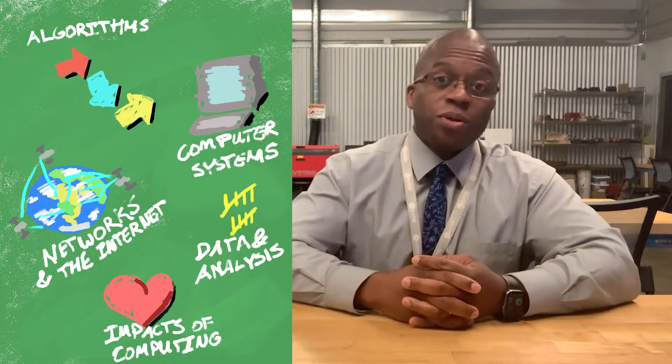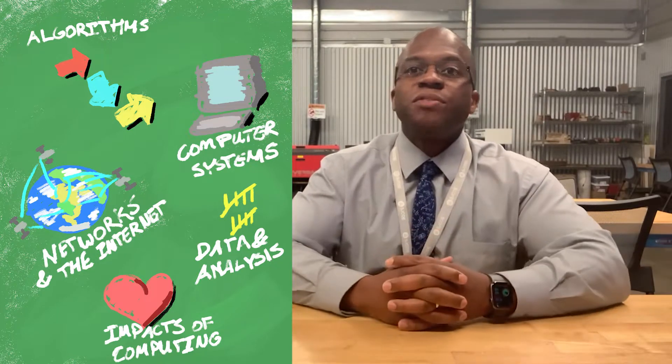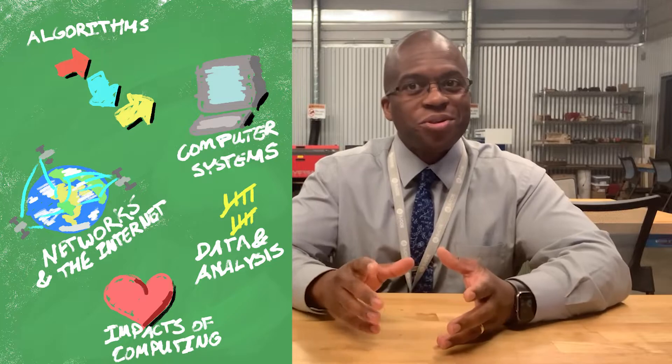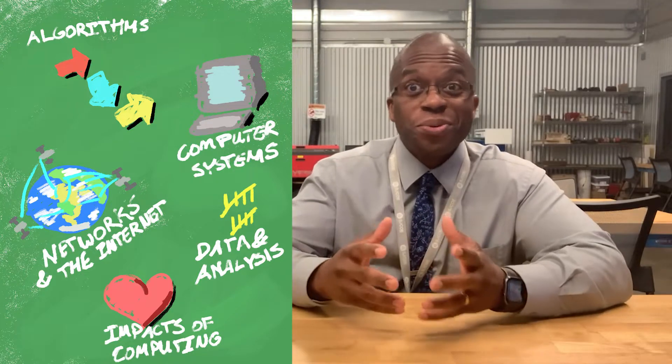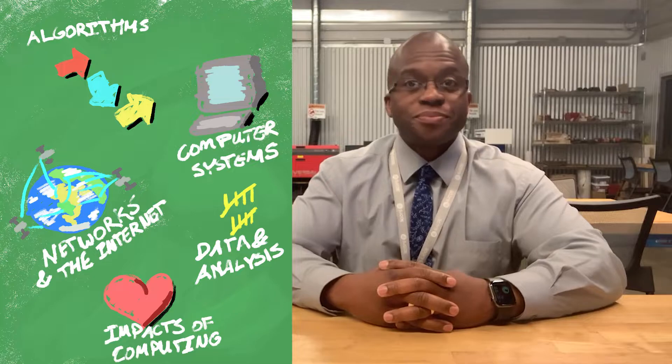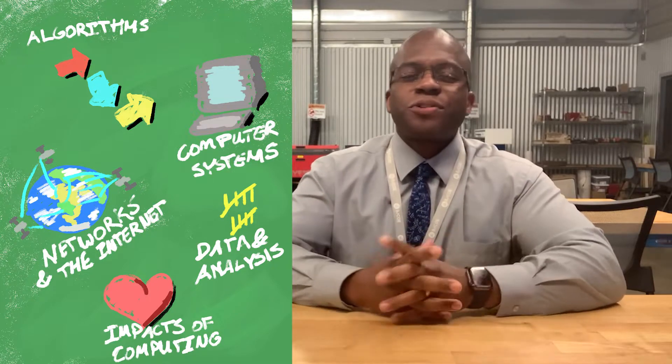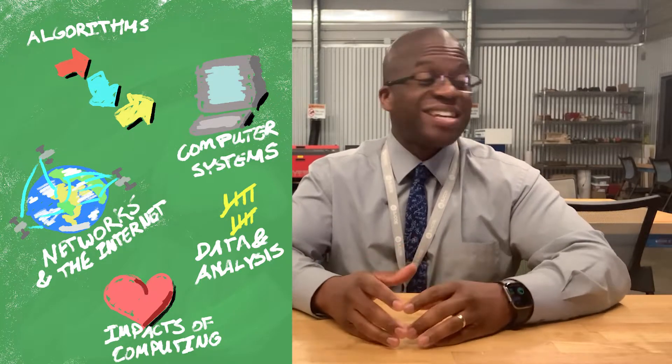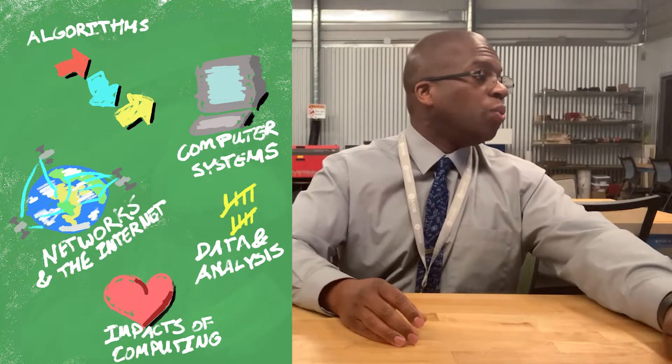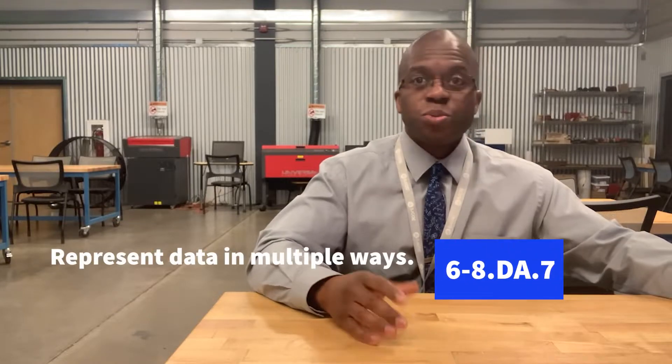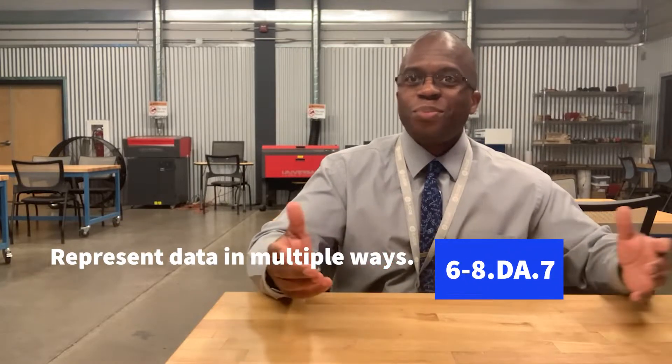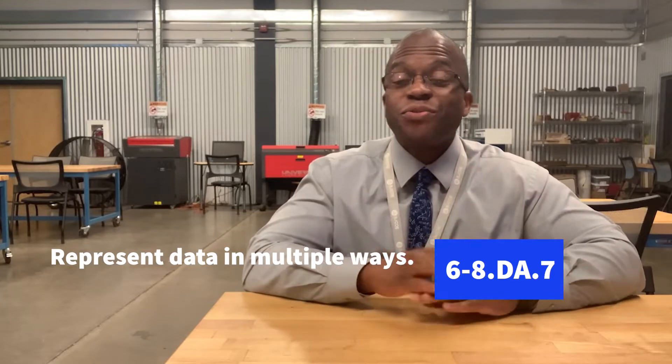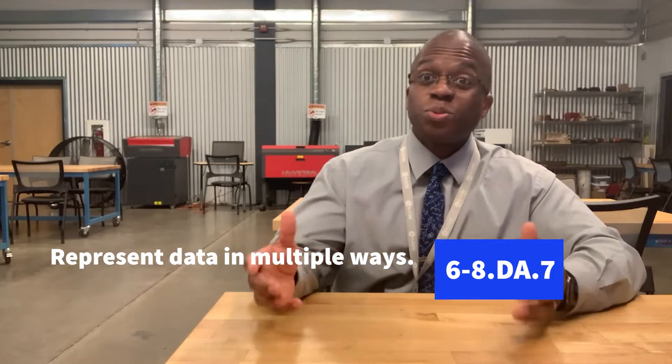All of these are important. Algorithms and programming is the coding that you think of, but networks and the internet is key too. We're talking through a network through the internet, which is a network of networks. Data and analysis is going to be important in this lesson. In fact, we are going to be using 6-8-DA7 to represent data in multiple ways. And Paint 3D is going to be great for allowing students to creatively represent their data in multiple ways.